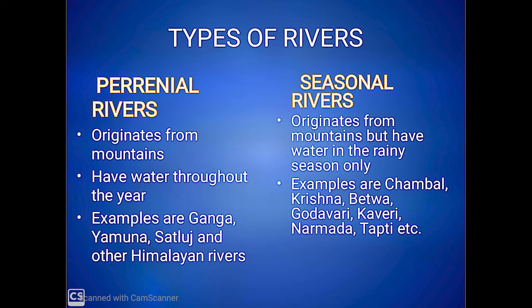Seasonal rivers — as it is clear from the name — also originate from mountains, but they have less water or have water during the rainy season only. That is why they are called seasonal rivers. Chambal, Betwa, Krishna, Kaveri, Narmada, and Tapti are rivers of this category.